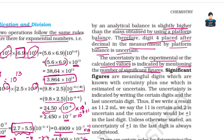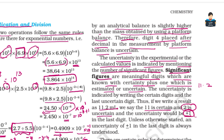Significant figures are meaningful digits which are known with certainty plus one which is estimated or uncertain. Significant figures which are known with certainty have an uncertainty of plus or minus one in the last digit.